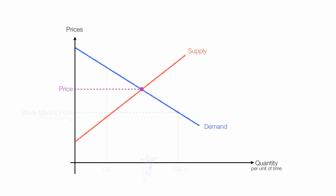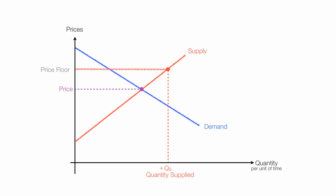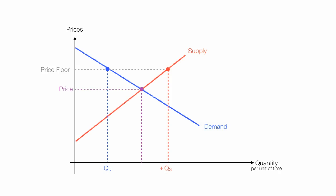Now I'm going to talk about price floors. A price floor is a price set above market price. To find quantity supplied, go across the price floor until it touches the supply curve and go down — this is quantity supplied. For quantity demanded, follow the price floor to the demand curve and go down — this is quantity demanded, and that has gone down. Now we have a situation where quantity supplied is greater than quantity demanded, and this will create a surplus.